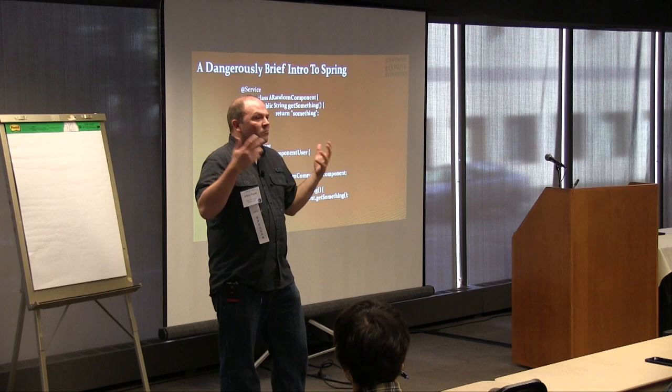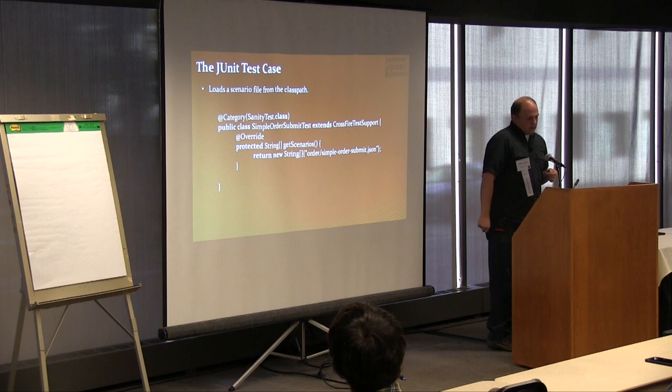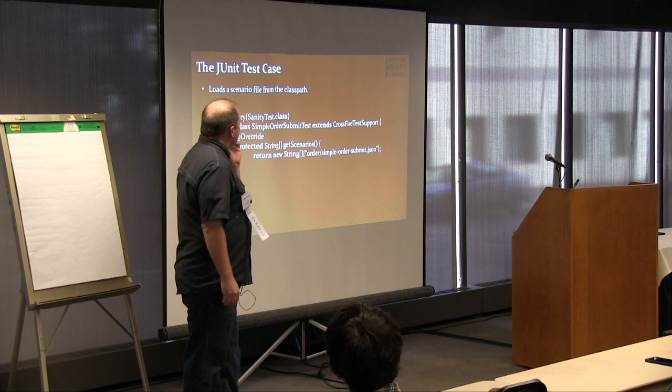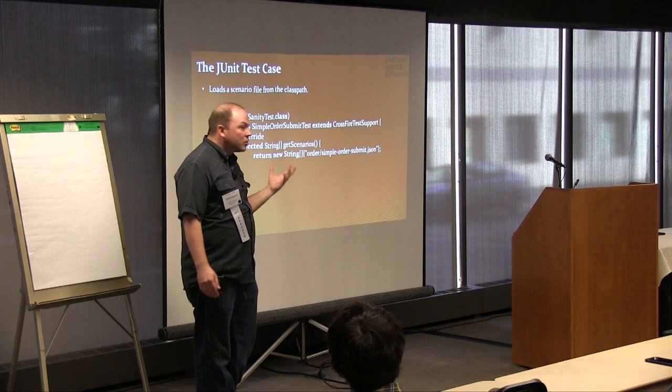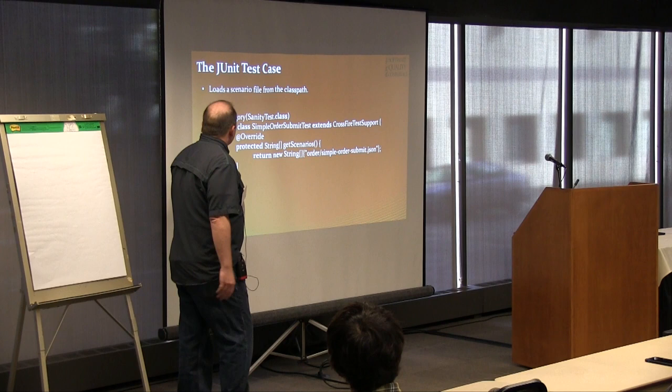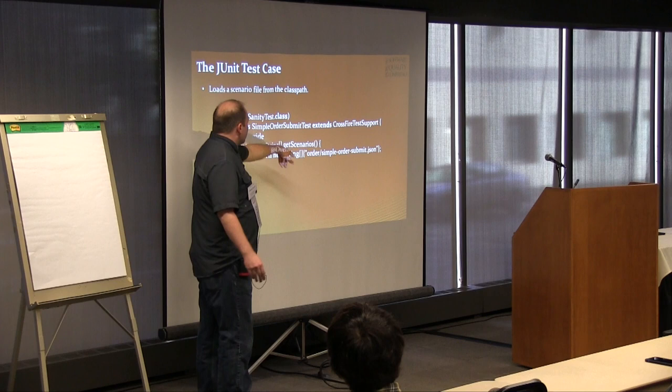And then here's our really hard to implement JUnit test case. So every test case has an actual JUnit test case and a corresponding JSON file, or possibly more than one. And as you can see, it's really just a simple mapping here. So we have this Crossfire test support base class, and all you do is basically tell it, hey, I want you to run the normal test stuff with these JSON files. Pretty simple.